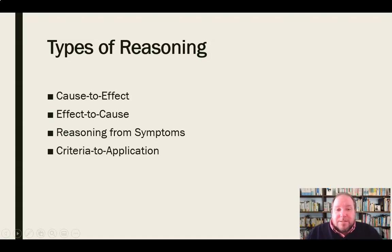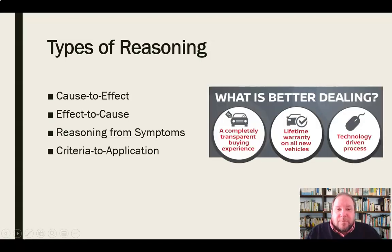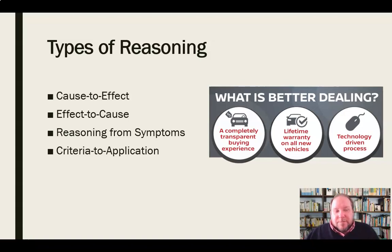What is it that people need and are looking for? For example, if you're looking to buy a car, an advertisement lays out the criteria you should be using — complete transparency, a lifetime warranty, a technology-driven process. Presumably these are all things provided by this dealer. So they're laying out the criteria necessary in the application of that situation.